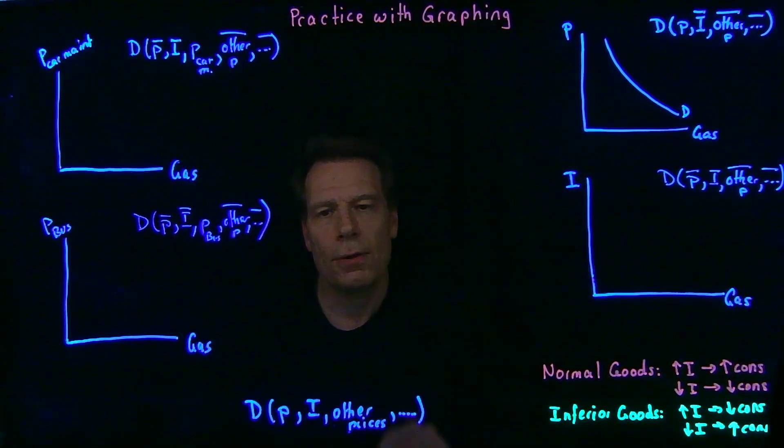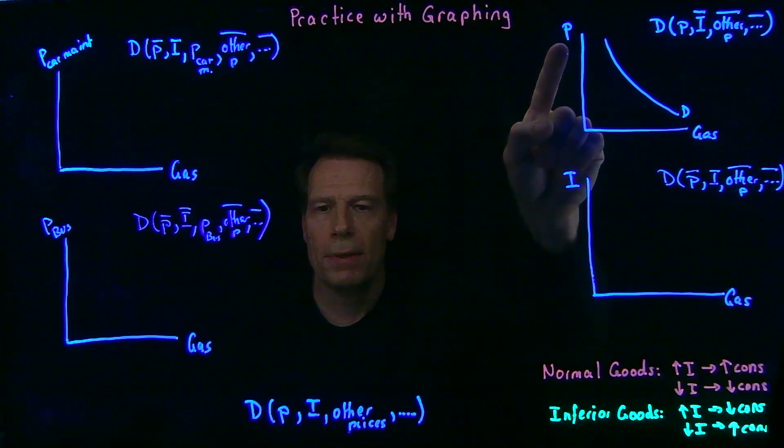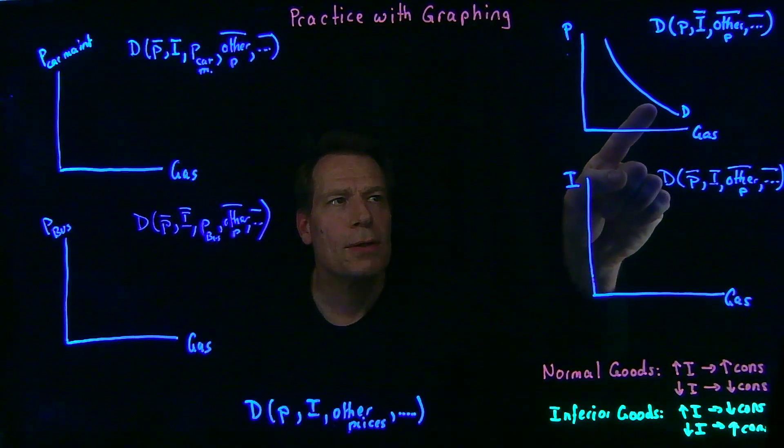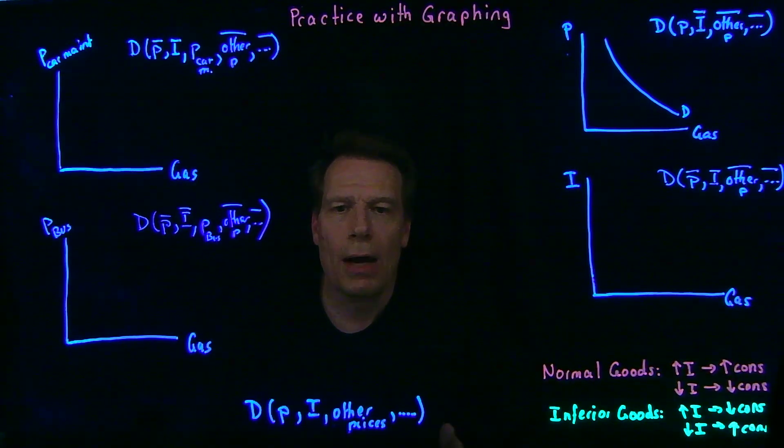In the case of demand curves, we said, the only thing that can move us along the curve is a change in what appears on the vertical axis. As the price of gasoline changes, we move along the demand curve to read off how the quantity demanded changes.